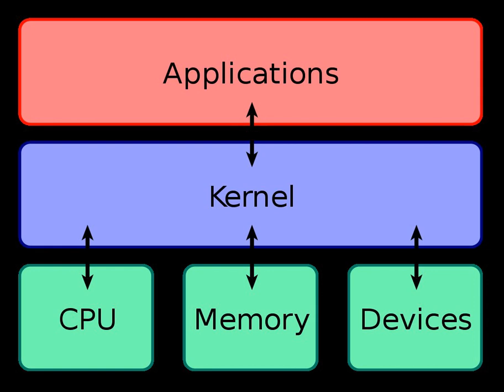The idea of a kernel where I/O devices are handled uniformly with other processes, as parallel co-operating processes, was first proposed and implemented by Brinch Hansen. In Hansen's description, the common processes are called internal processes, while I/O devices are called external processes. Allowing applications direct access to controller ports and registers can cause the controller to malfunction or the system to crash. Depending on the complexity of the device, some devices can be surprisingly complex to program and use several different controllers. Because of this, providing a more abstract interface to manage the device is important, normally done by a device driver or hardware abstraction layer.